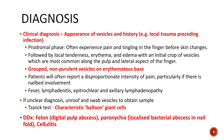If there is any suspicion, a clinician can unroof and swab the vesicles to obtain samples and perform a Tzanck test to look for characteristic balloon giant cells under the microscope. It is also important to differentiate herpetic whitlow from other infections such as felon, which is a digital pulp abscess, or paronychia, which is a bacterial abscess in the nail fold, and also cellulitis.